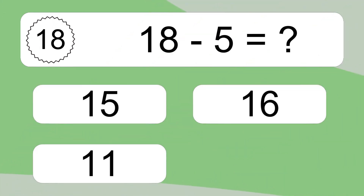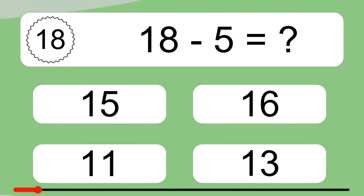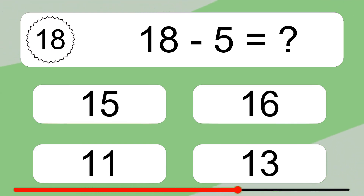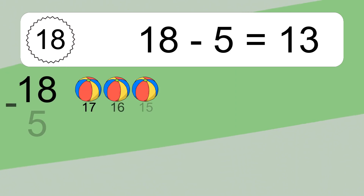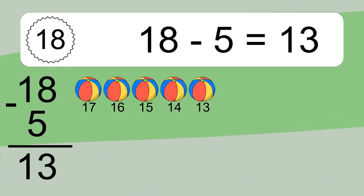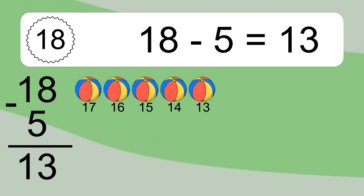18 minus 5 equals 13. 18 minus 5 equals 13. Let's count it: 17, 16, 15, 14, 13.